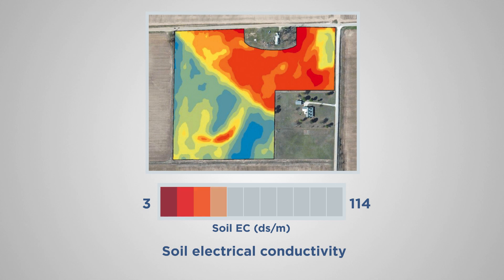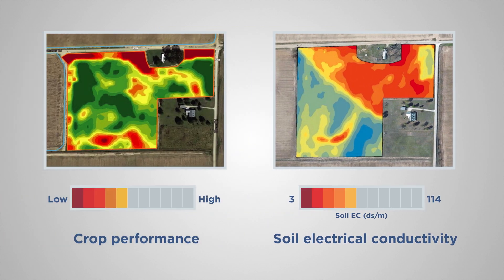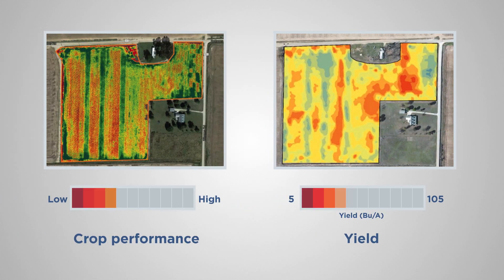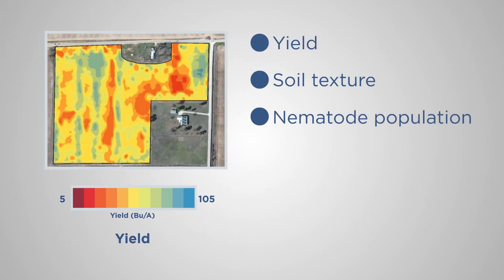The finer the soil texture, the greater the salt concentration, resulting in greater electrical conductivity. Soil samples collected from each field helped determine the abundance of specific nematodes present. Yield maps were created to establish the relationship between yield, soil texture, nematode population, and nematicide treatment.